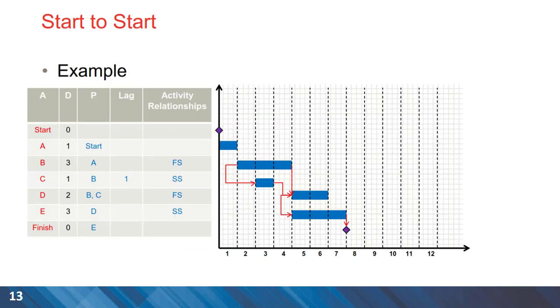Here is an example, a simple project with five activities, and there are two start to start relationships with a gap. The finish milestone shows that the completion time for this project is at the end of the seventh time unit.